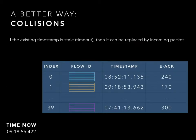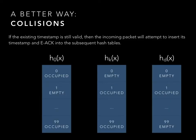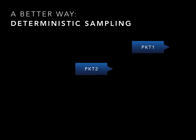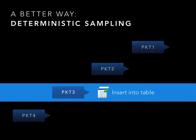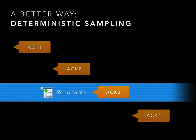The table also handles collisions — cases where two packets with different flow IDs hash into the same index. If the existing timestamp is expired, the entry is replaced; this is reported as a timeout. If the existing timestamp has not expired, we attempt to push it into subsequent tables and drop it when all attempts have failed. Considering the memory limitations of a switch, we subsample the packet space deterministically while ensuring that both packets and their corresponding acknowledgements are sampled.